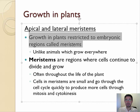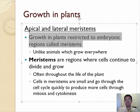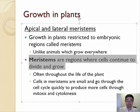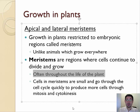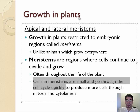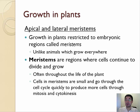The leaves don't get bigger. Unlike humans where everything gets bigger, in plants they grow in meristems, with other things just staying the same size. Meristems are regions where cells continue to divide and grow, often throughout the whole life of the plant. Cells in the meristem go through the cell cycle quickly, doing cytokinesis again and again. These are good places to look for cells in mitosis if you're ever doing a lab on that.